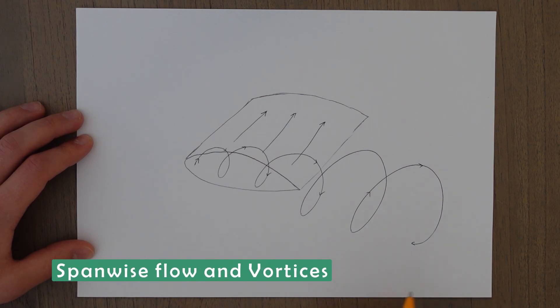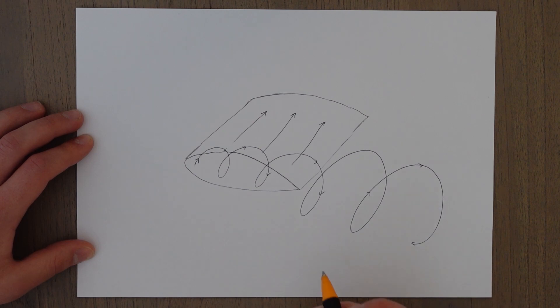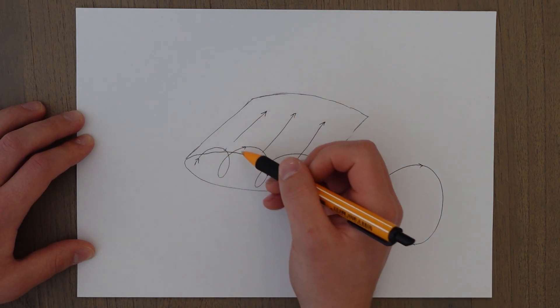I'm Grant and welcome to the fifth class in the Principles of Flight series. Today we're going to be moving away from looking at the airflow in a 2D way and adding in that third dimension. By adding this third dimension, we change the picture, make things a bit more complex. Up until now, when looking at aerofoils and wings, we've been looking at them in two dimensions. Now we're going to introduce the third dimension and talk about spanwise flow and vortices.